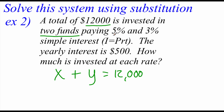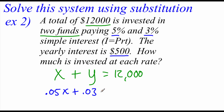The second piece: the first account pays 5%, the second pays 3%, and the total interest for the year was $500. The first account earns 0.05x and the second earns 0.03y. Adding those together gives us $500. So our second equation is 0.05x plus 0.03y equals 500.